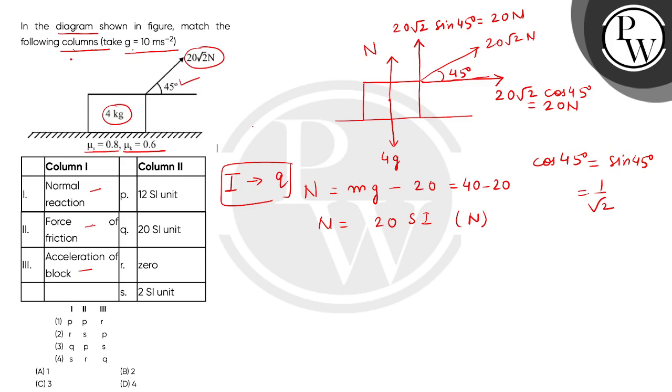Now we have to find force of friction for the second entry. Force of friction is taken as mu multiplied by the normal reaction. When we move the block, we consider the coefficient of kinetic friction.